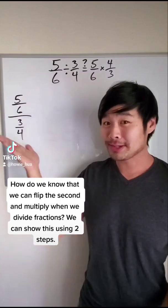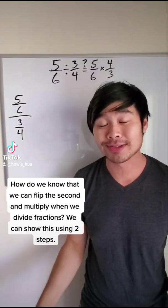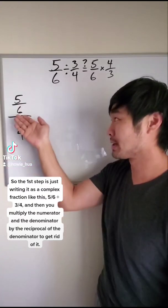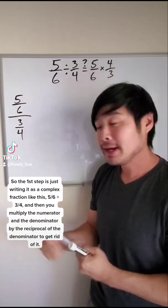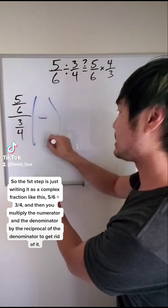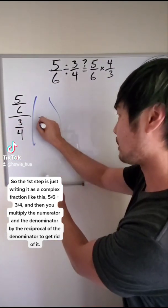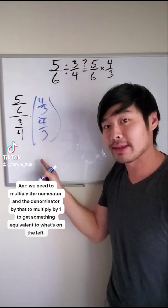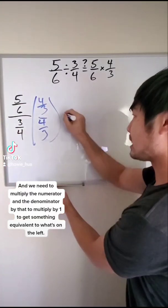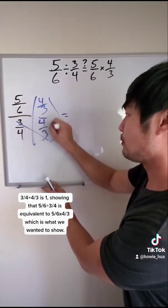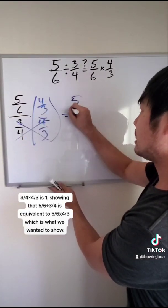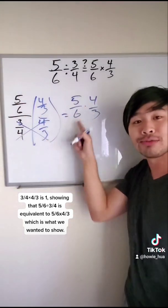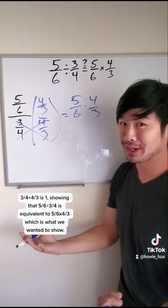How do we know that we can flip the second and multiply when we divide fractions? We can show this using two steps. So the first step is just writing it as a complex fraction like this, five-sixths divided by three fourths. And then you multiply the numerator and the denominator by the reciprocal of the denominator to get rid of it. And we need to multiply the numerator and the denominator by that to multiply by one to get something equivalent to what's on the left, three fourths times four thirds is one, showing that five-sixths divided by three fourths is equivalent to five-sixths times four thirds, which is what we wanted to show.